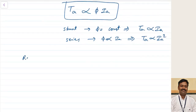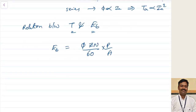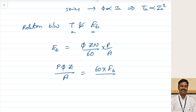Now let us see the relationship between the torque and the back EMF. We have already derived the back EMF. The back EMF is the EMF induced because the motor is rotating — while rotating, the conductors cut the magnetic field, inducing an EMF. That is given by φZN/60 into P/A. Rearranging: P·φ·Z/A = 60·Eb/N.